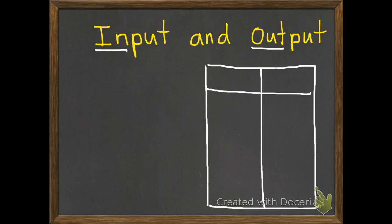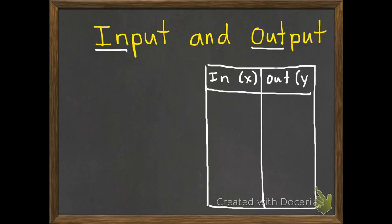We're also going to be using tables today to help us stay organized. One part of our table is going to be the input, and we're going to be using variables and algebra. We'll be using x and y as our variables — you can use any letter, but we're going to use the most common ones. So the first part of our table is the input of x, and the second part is the output, which we'll use y.